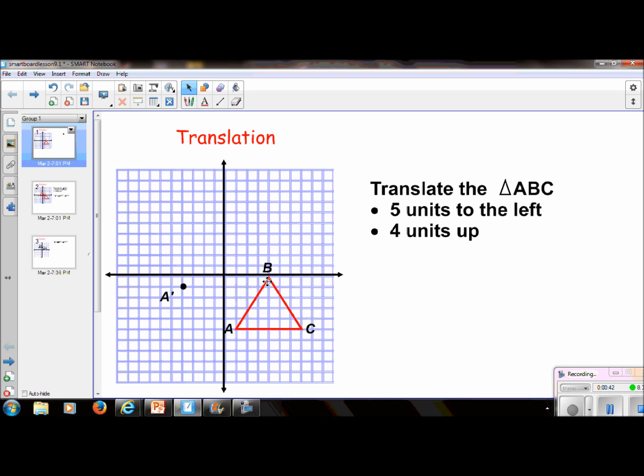And then I'm going to take point B and do the exact same thing. 1, 2, 3, 4, 5 and then 4 units up. 1, 2, 3, 4, and that's my new point and I'm going to call that B prime.